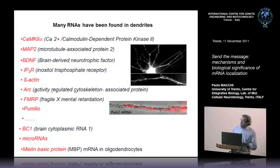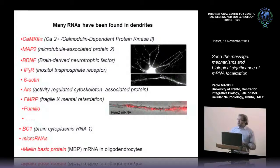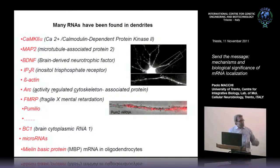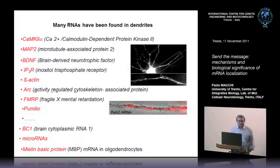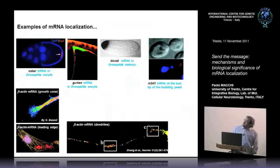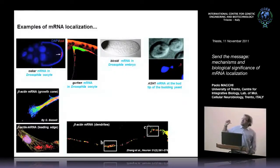We also have localization of mRNA in the processes of oligodendrocytes, which are not neurons but have long neurites important for their function. Some of these mRNAs encode proteins involved in cytoskeleton arrangement — which makes sense if you want to create a new structure, you need to modify the underlying cytoskeleton. Others encode proteins important for signal transduction. The number of localized mRNAs keeps increasing, and this phenomenon has been found in many cell types and organisms.